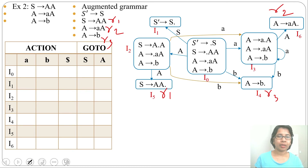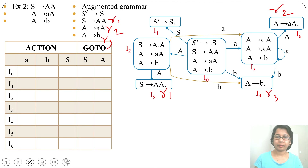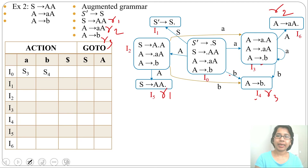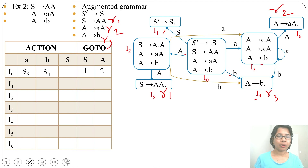Next we construct the LR parsing table. It has two parts: Action and Go-To. Action contains all terminals plus dollar; Go-To contains the variables S and A. The states I0 through I6 are listed in the first column. For I0: by terminal a it goes to I3, so write S3 in the a column; by terminal b it goes to I4, write S4 in the b column; by S it goes to I1, write 1 in the S column; by A it goes to I2, write 2 in the A column.